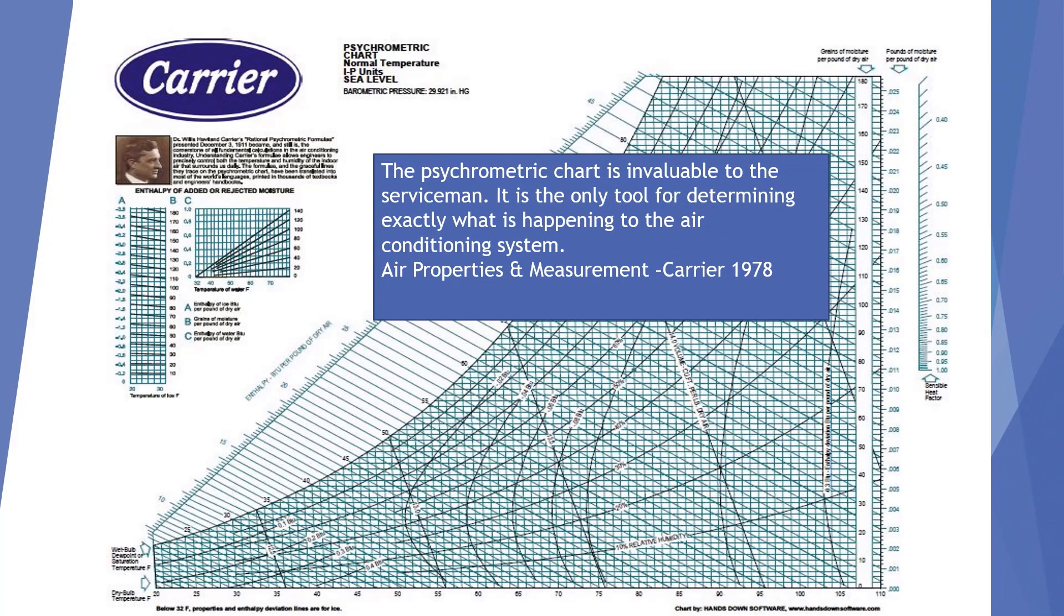The psychrometric chart is invaluable to the serviceman. It is the only tool for determining exactly what is happening to the air conditioning system. This is a quotation out of the air properties and measurement booklet that is available from Carrier.